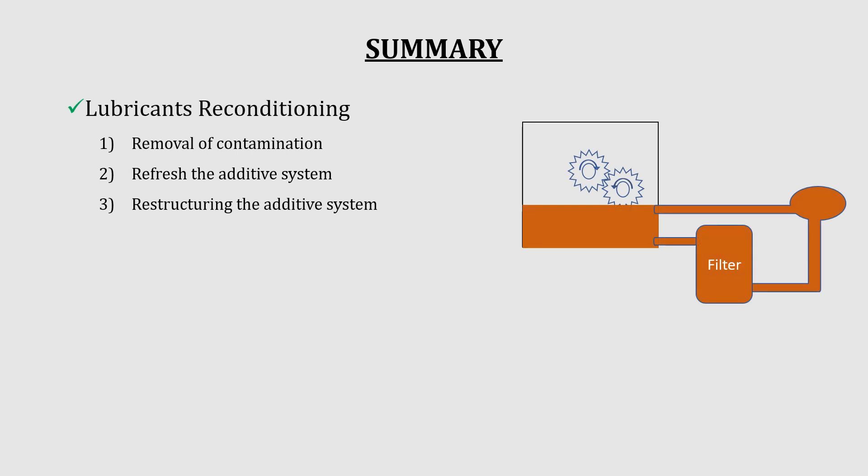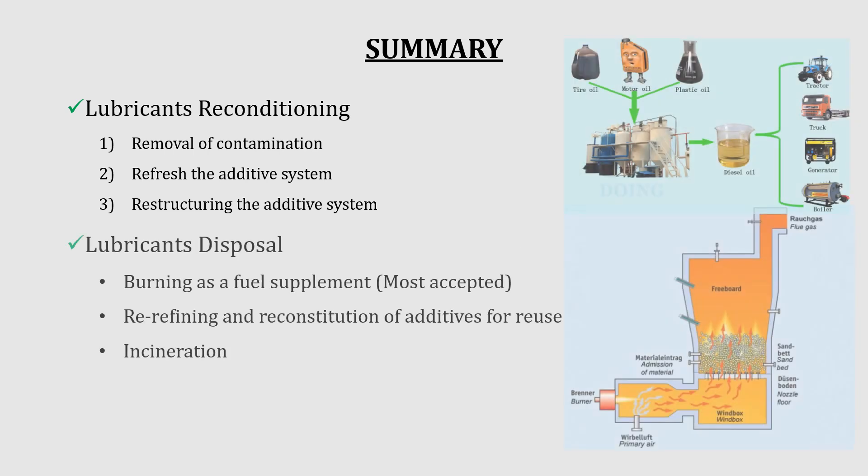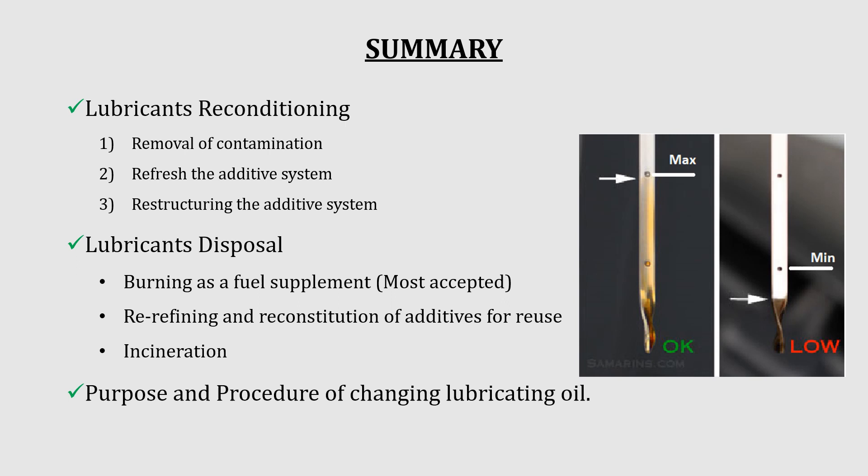This will end your lecture on the lubrication system unit. Let's summarize: first we covered lubricants reconditioning, where used lubricating oil is refined and reused. Reconditioning covers three methods: removal of contamination, refreshing the additive system, and restructuring the additive system. Next we covered lubricants disposal — the oil which cannot be reused is disposed of by burning as a fuel supplement, refining, or incineration. Finally, we studied the purpose and procedure of changing lubricating oil. Thank you.